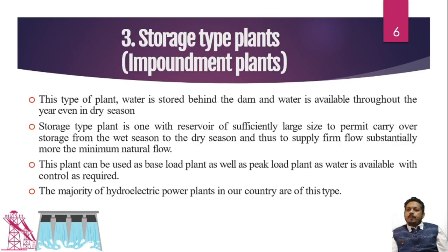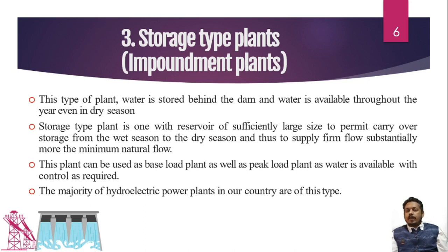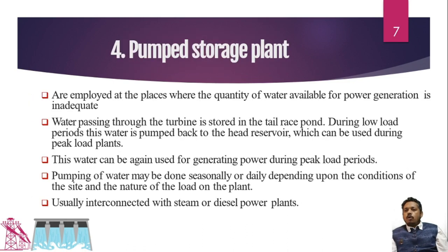The third type is the most popular and in India most power plants are built on this theme: the storage type or impoundment power plant. Here, the catchment area and reservoir size are very large — we store huge quantities of water behind the plant in a reservoir and use it whenever required. It can serve as base load, and in cases where storage is smaller, as peak load too. Since it is not dependent on seasons, it can produce electricity even in summer.